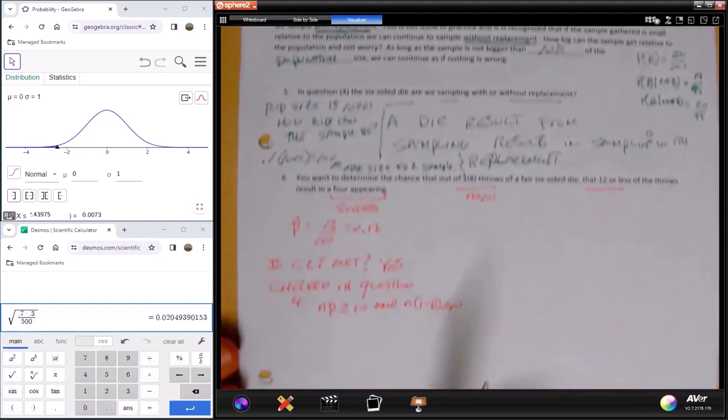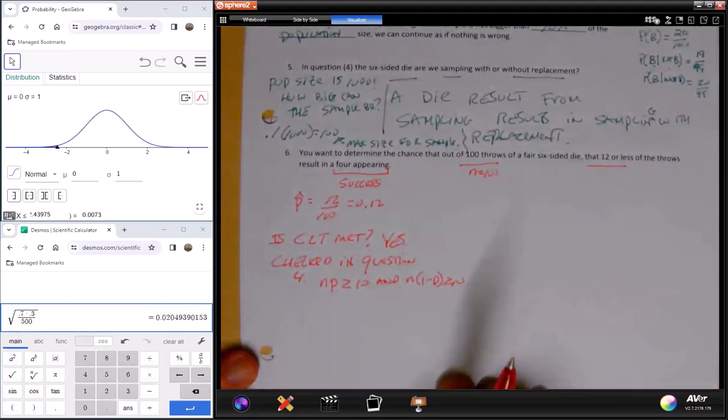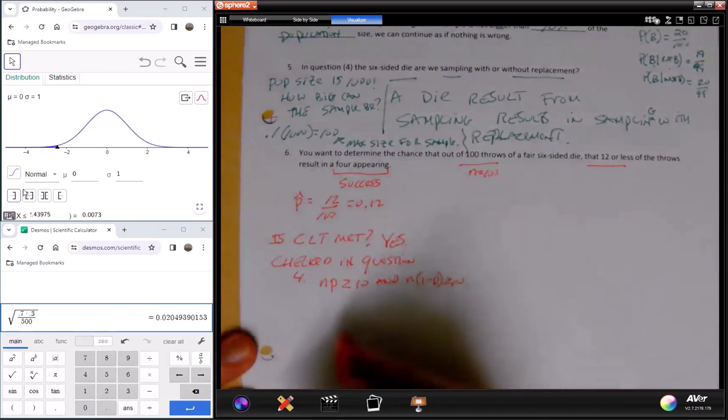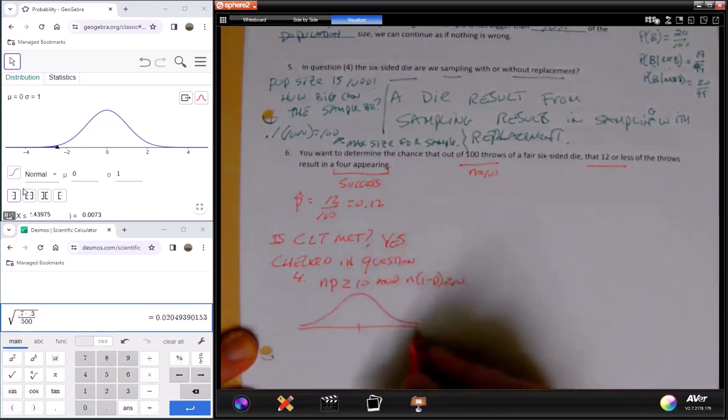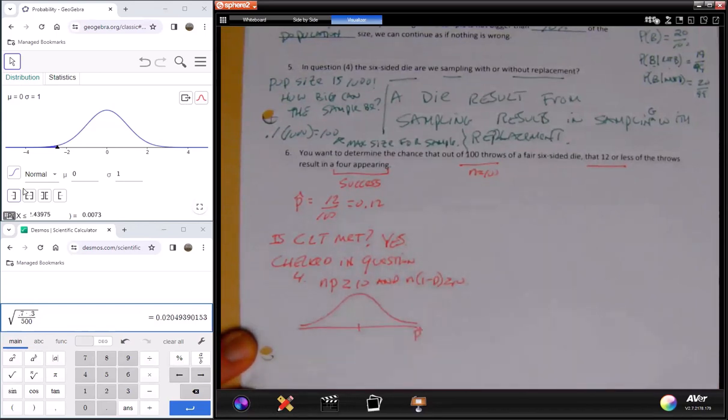So yes, that is met. Now, once we do that, it's a matter of recognizing what that means - that once we meet the criteria, what we're saying is that we can assume or pretend like the shape of this distribution of p-hat values is normal.